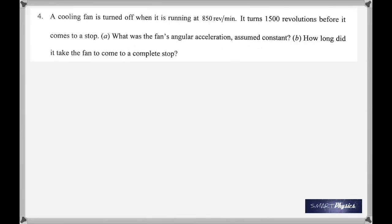On to the fourth one. A cooling fan is turned off when it is running at 850 revolutions per minute — again, you've got to change it into per second, so divide by 60. It turns 1,500 revolutions before it comes to a stop. So the final angular velocity is zero.